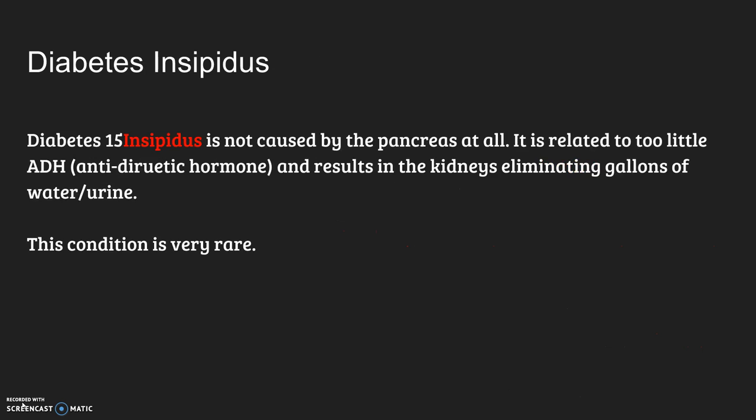Then there's diabetes insipidus. Diabetes insipidus is not caused by the pancreas at all — it's related to too little antidiuretic hormone. That results in the kidneys putting out gallons and gallons of urine every day. This condition is very rare, and treatment is just that you have to drink lots and lots of water because your body is eliminating water at a fast rate and you would become very dehydrated, which could be very dangerous.